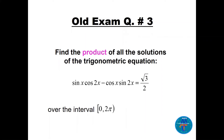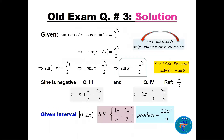Question three: find the product of all solutions of sin x · cos 2x − cos x · sin 2x = √3/2 on the interval [0, 2π]. By recognizing the sine difference identity — sin u cos v − cos u sin v = sin(u − v) — the left side becomes sin(x − 2x) = sin(−x).